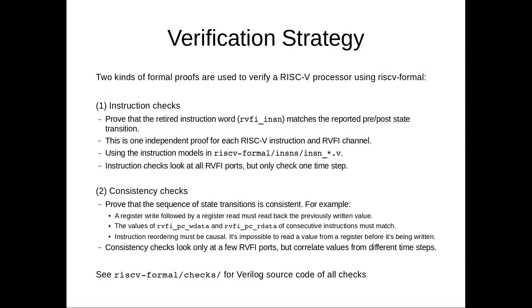The instruction checks reset the processor, or start at a symbolic state for unbounded proofs, let it run for a certain number of cycles, then assume that in the last cycle the processor retires a specific instruction. If the check is for the ADD instruction, it assumes the last instruction retired is an ADD, then looks at all the RISC-V Formal interface signals to verify compliance - checking if the instruction was decoded correctly and if the register value written is actually the sum of the values read.